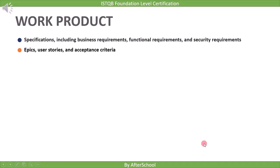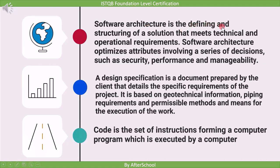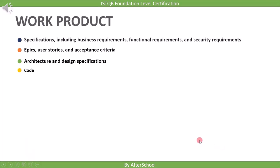The next work product is architecture, design specifications, and code. Software architecture is the defining and structuring of a solution that meets technical and operational requirements, optimizing attributes such as security, performance, and manageability. A design specification is a document prepared by the client detailing specific project requirements based on geotechnical information, piping requirements, and permissible methods for execution. Code is the set of instructions forming a computer program which is executed by a computer.